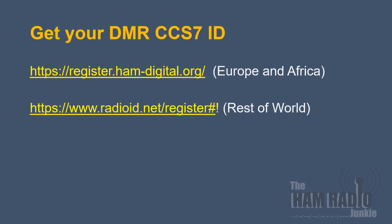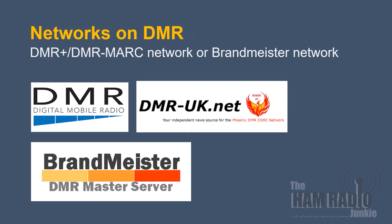To get your ID number, just visit one of these links depending on where you are in the world — I'll leave them in the description below. Now, I've discussed this in previous videos about digital mobile radio: there are two main networks in operation on DMR, and they are DMR Plus, also known as DMR Mark, and the Brandmeister network. Each network has its own particular way of connecting to other repeaters, talk groups, and reflectors, and for this reason I'm just going to concentrate on the DMR Plus / DMR Mark network for this video.